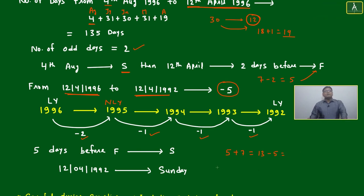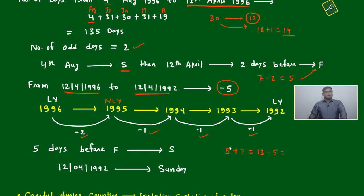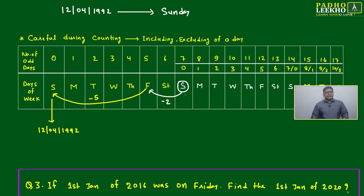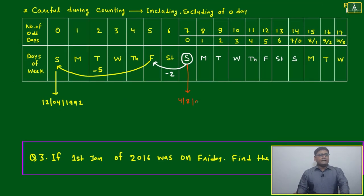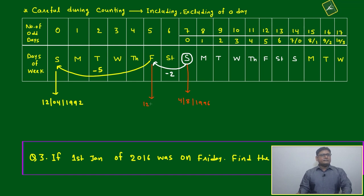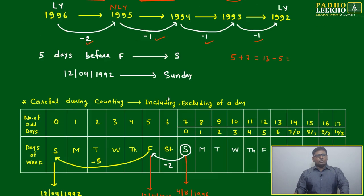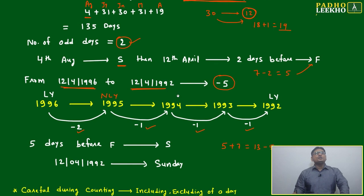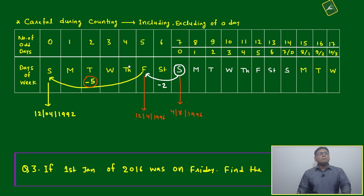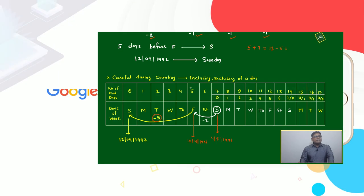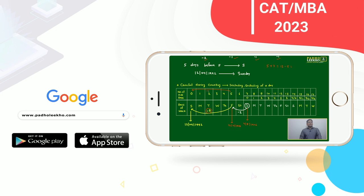Five days before Friday: for easy calculation, Friday is 6, so 6 minus 5 = 1, which is Sunday. Or directly: Friday's number is 5, minus 5 = 0, and 0 is Sunday. So 12th April 1992 is Sunday. To summarize: 4th August 1996 (Sunday) → 12th April 1996 (Friday, 2 odd days back) → 12th April 1992 (Sunday, minus 5 days).